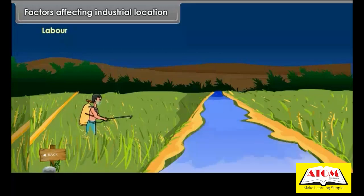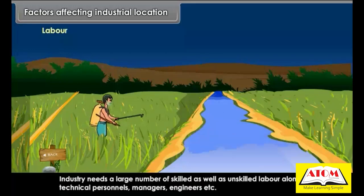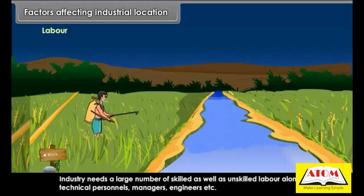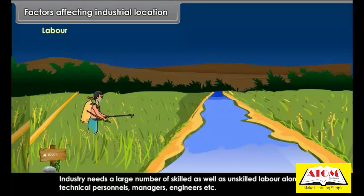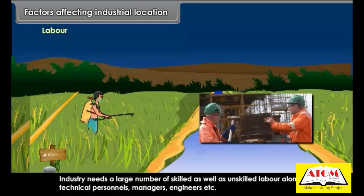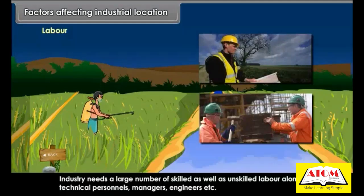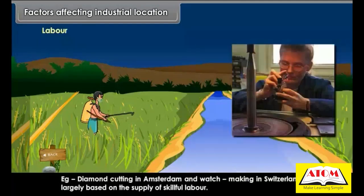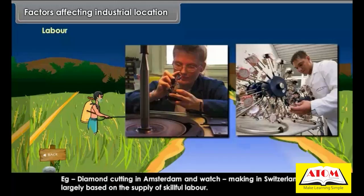Industry needs a large number of skilled as well as unskilled labor, along with technical personnel, managers, and engineers. For example, diamond cutting in Amsterdam and watchmaking in Switzerland are largely based on the supply of skillful labor.